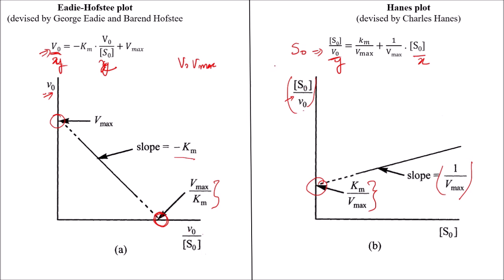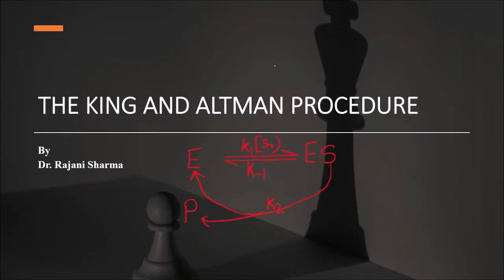In the next video we will deal with the King-Altman procedure. What actually it deals with? Till now whatever graphs we have seen, Michaelis-Menten equation, Lineweaver-Burk plot, and now today's plot, what was the common thing there in all these plots? They are using enzyme and only one intermediate, ES intermediate, which then breaks down into enzyme and product form.